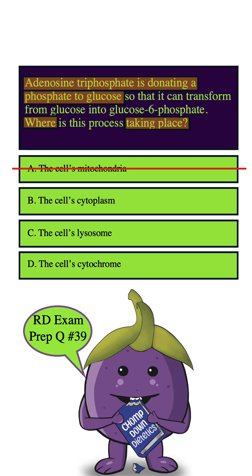But just for good practice, let's go through the other answers. How about C? Lysosomes are actually involved in breaking down waste materials and cellular debris, but glycolysis — specifically the step mentioned in the question — does not take place in the cell's lysosome. So we can eliminate this answer choice as well.